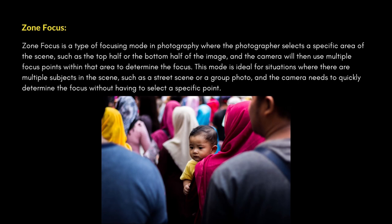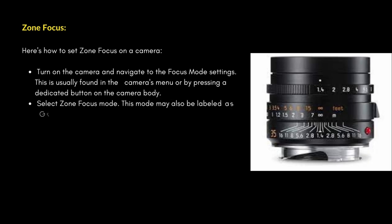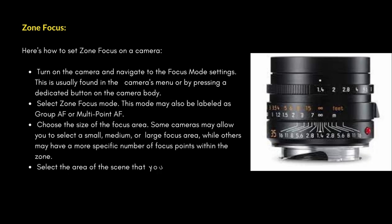This mode is ideal for situations where there are multiple subjects in the scene, such as a street scene or a group photo, and the camera needs to quickly determine the focus without having to select a specific point. Here's how to set zone focus on a camera.